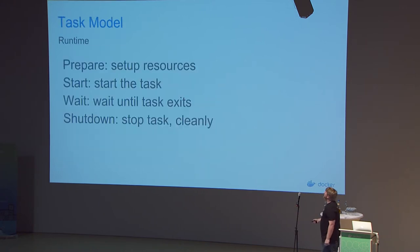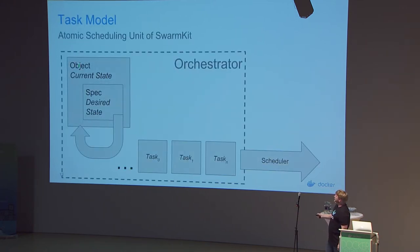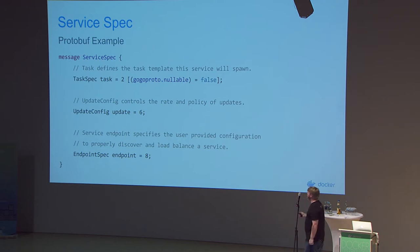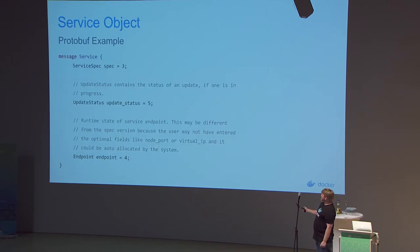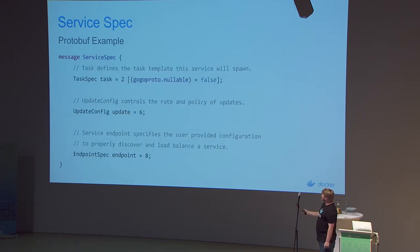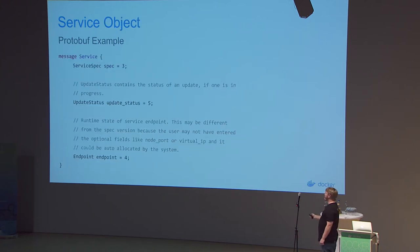Stepping back: the entirety of this system is implemented with gRPC and protobufs. We have the service spec as user input, containing the task spec, update config, and endpoint config. We also have the object component. The update config in the spec corresponds to update status in the runtime object, and similarly for the network endpoint.